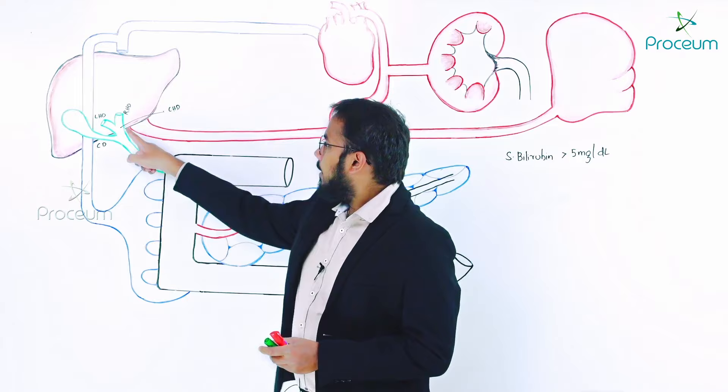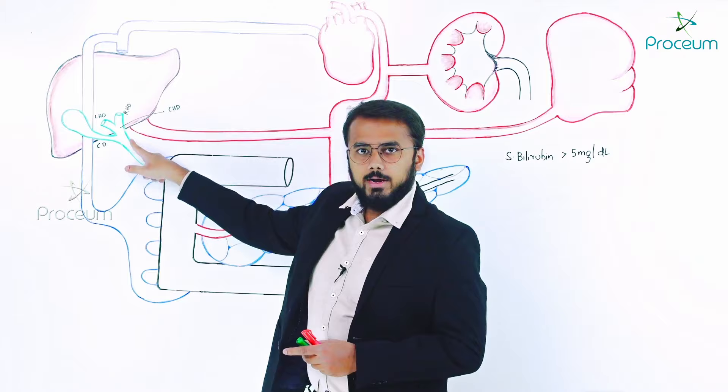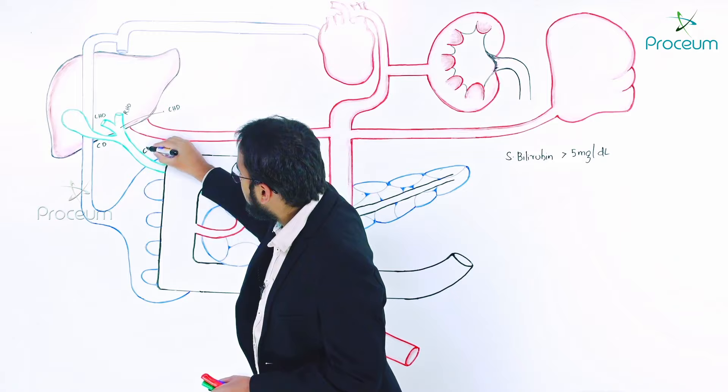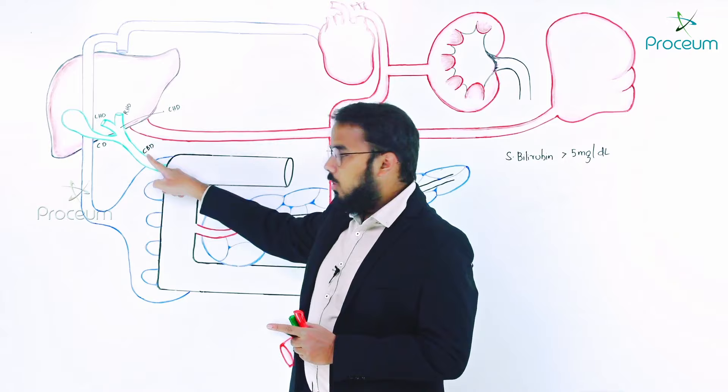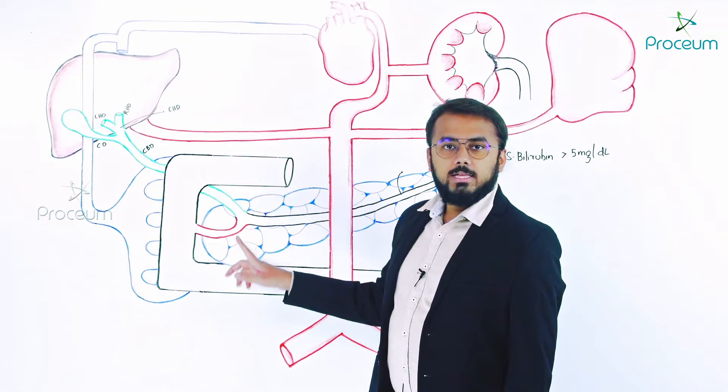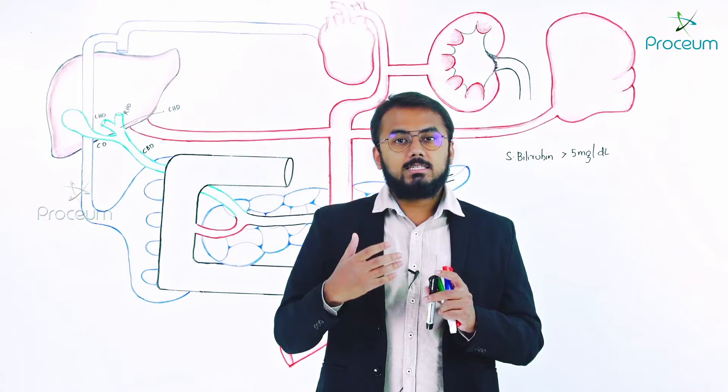The common hepatic duct along with the cystic duct together form another duct — the common bile duct. This common bile duct comes all the way down here. The black duct drawn within the pancreas is the only duct in the pancreas, and it is called the main pancreatic duct.